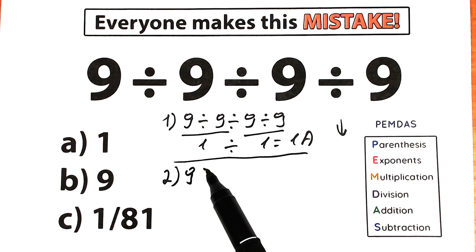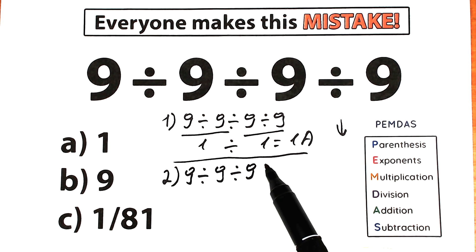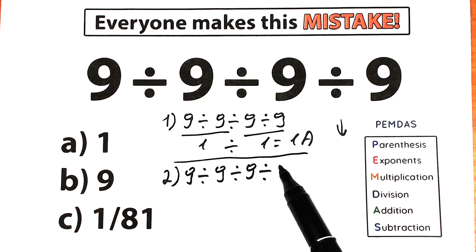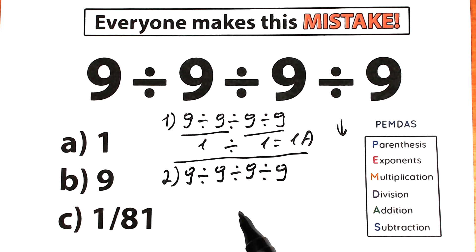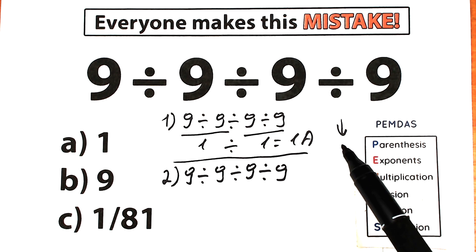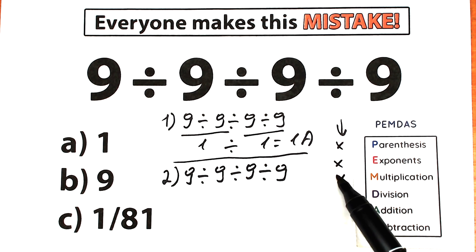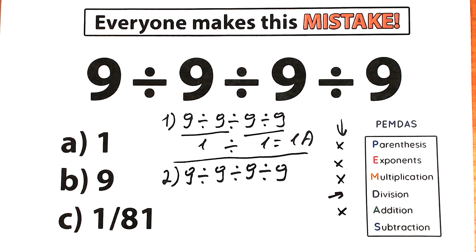Now let's solve our challenge according to PEMDAS order of operations. Here's our challenge: 9 dividing by 9, dividing by 9, and dividing by 9. As you can see, we only have division signs — no other signs. So we skip parentheses, skip exponents, and we have division in the multiplication/division group. We don't have any addition or subtraction signs.